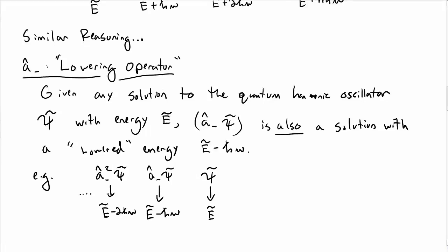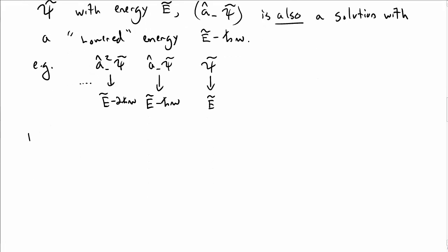In a previous video, we talked about how A+ and A- act as raising and lowering operators for the quantum harmonic oscillator for any solution. Now we're going to use these raising and lowering operators to construct a so-called ladder of states.